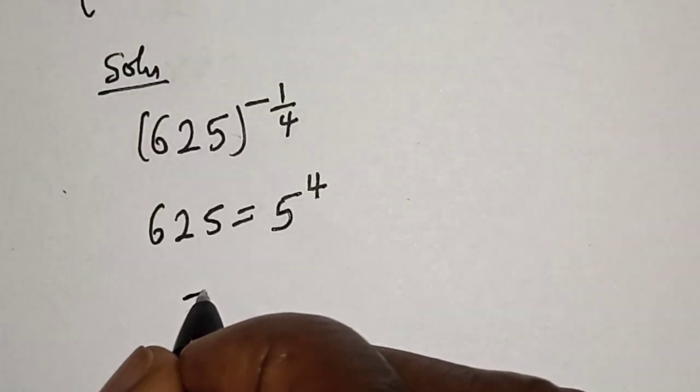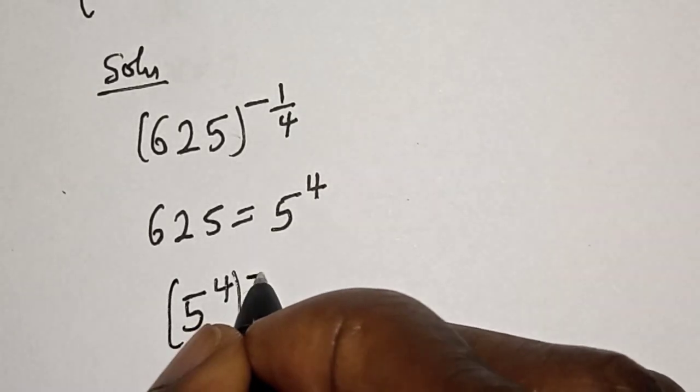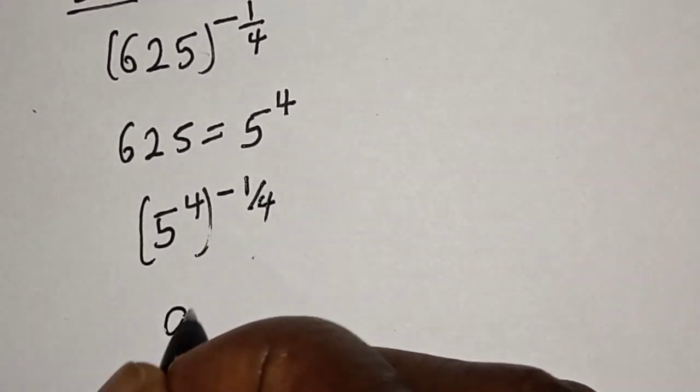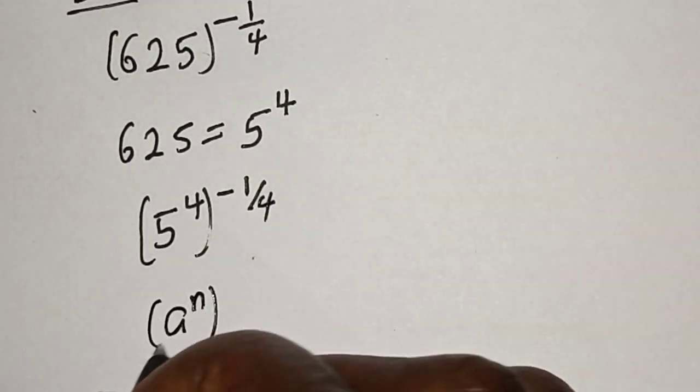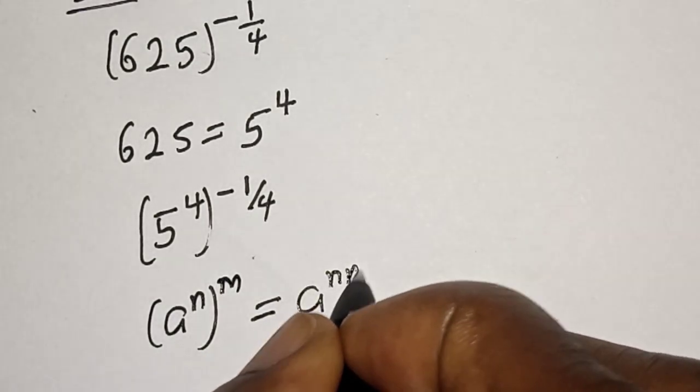Let's replace. We have 5 to the power of 4, to the power of minus 1 over 4. Now, remember this rule that a raised to power n to the power of m is equal to a raised to power nm.